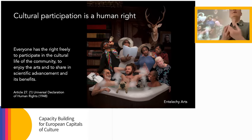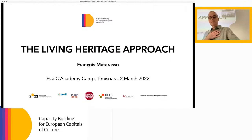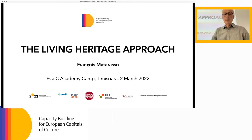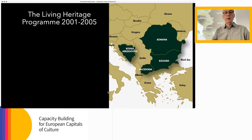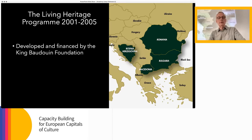The programme I'm going to talk about is, I think, the work I'm most proud of having been involved in and feel was most successful of anything I've ever done. It's particularly relevant because one of the countries involved was Romania. The Living Heritage Programme operated from 2001 to 2005 in four countries. It was developed and financed by the King Baudouin Foundation — the principal Belgian charitable foundation, financed among other resources by the Belgian Lottery.